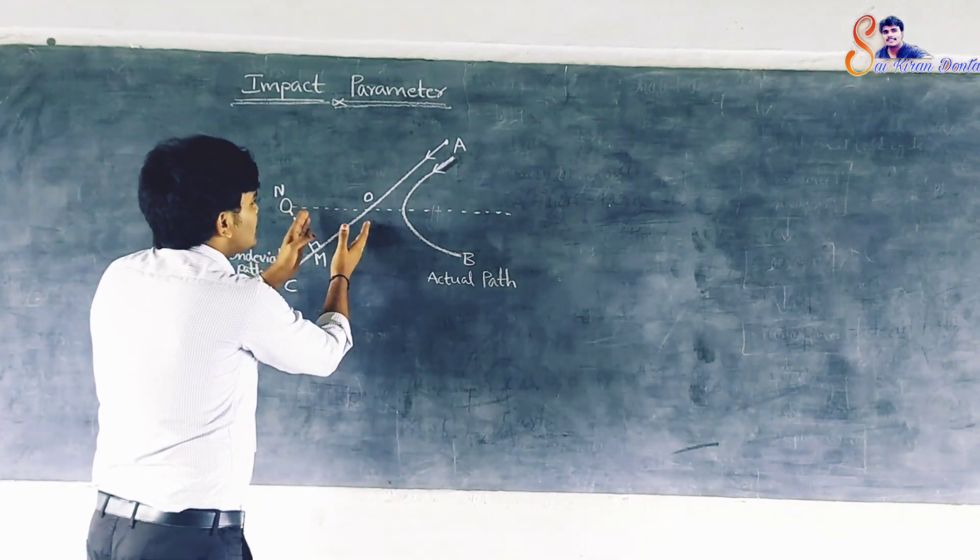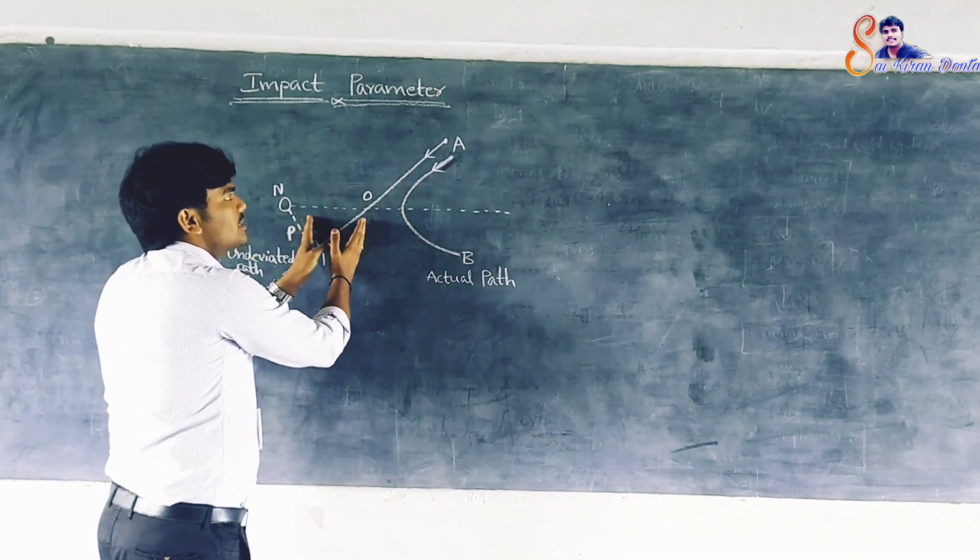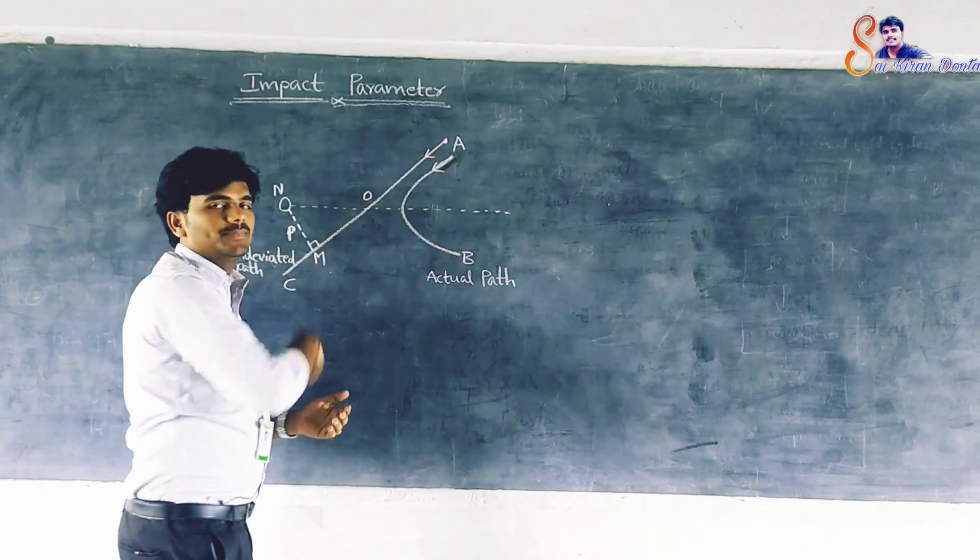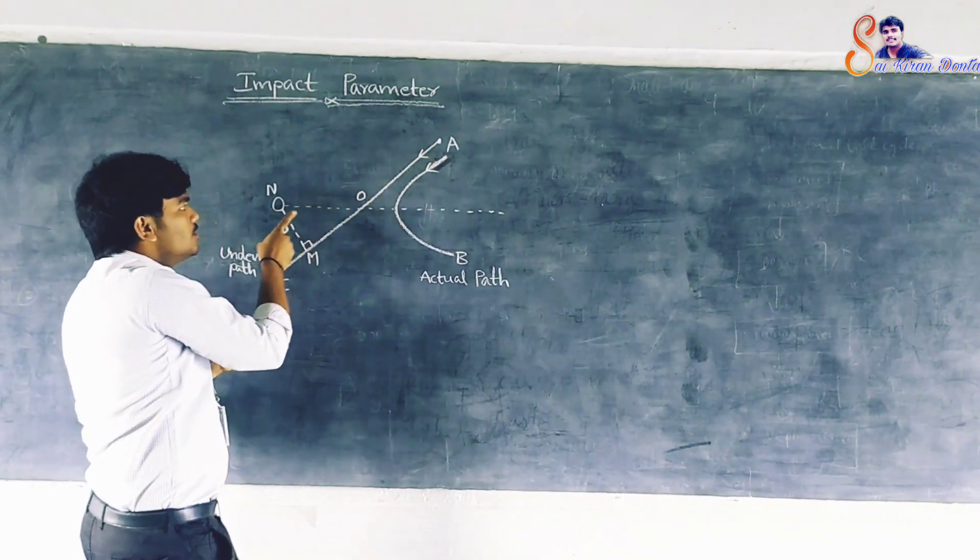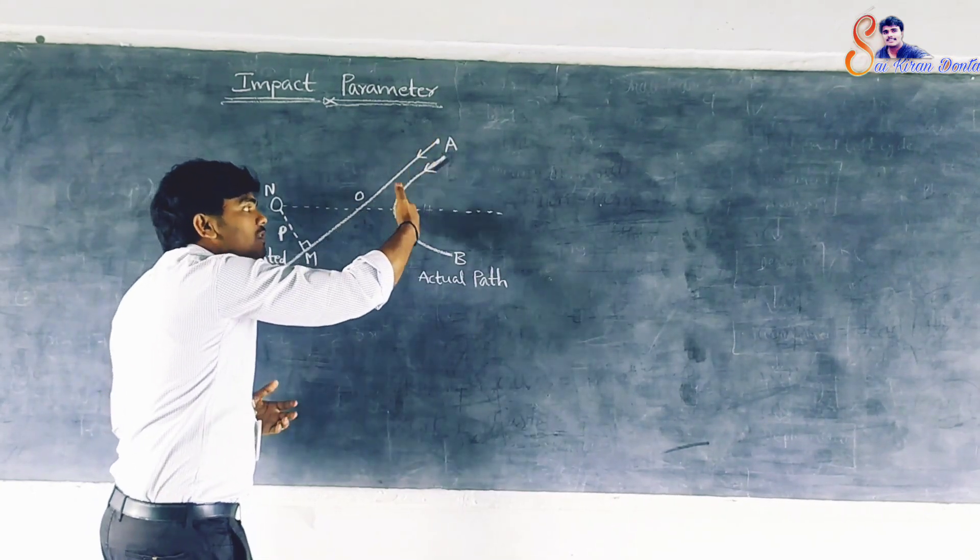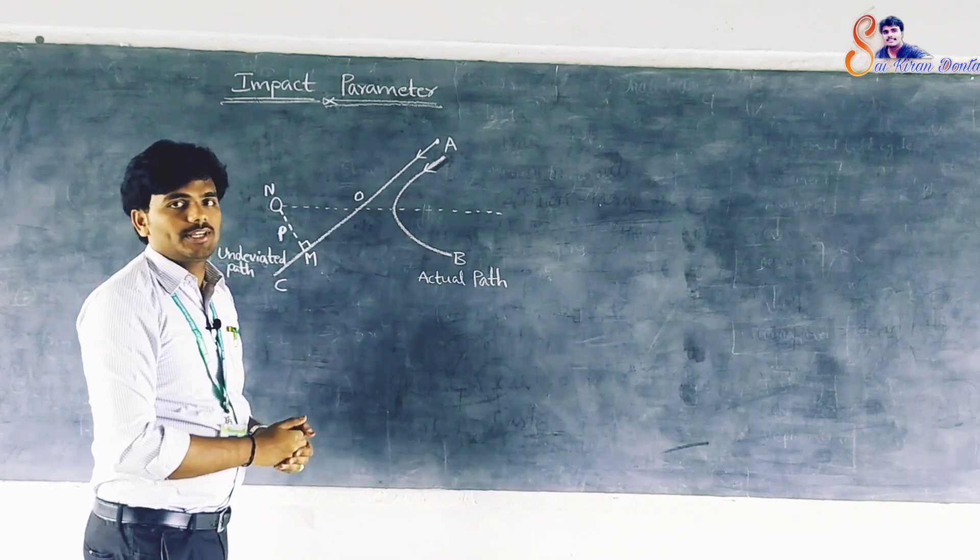Due to the presence of kulumbic repulsive force, the particle follows the hyperbolic path AB. Positive particle nucleus vaipa avochu kramam lho, kulumbic force of repulsion valla adhi hyperbolic path AB ni follow avothundi.